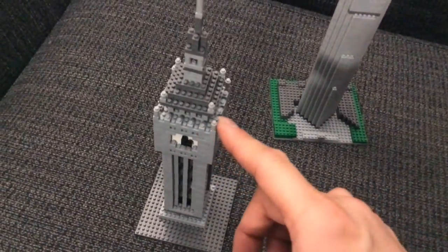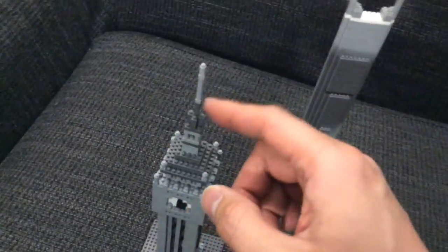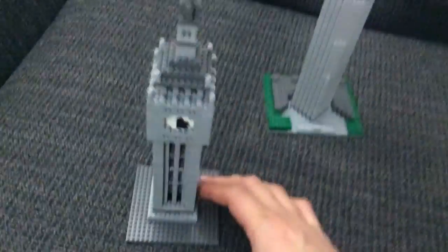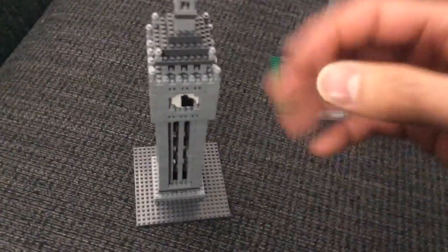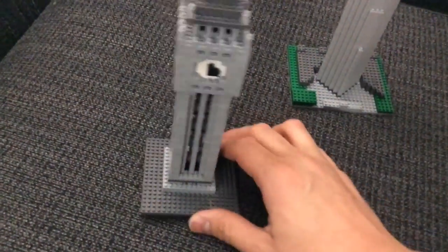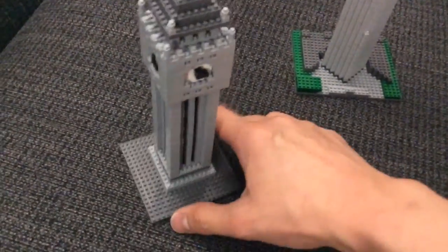Now, another annoying thing about this build, these little spires, okay? It's section-wise. So you have this section, the clock section, and the roof section. And then when you're done everything, you put it all together. Well, these stupid little spires keep popping off when I'm trying to stick all of them together. So that got annoying.